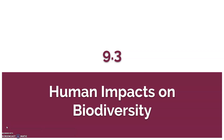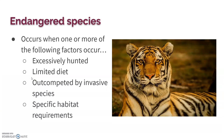In our very last video in AP Environmental Science, we are going to talk about human impacts on biodiversity. To talk about biodiversity, we have to first talk about the lack of biodiversity as we see with endangered species. What I want to focus on is what makes a species prone to becoming endangered or possibly extinct.